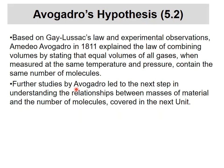So based on Guy-Lussac's law and experimental observations, Avogadro, this is around the time Dalton was coming into play too, he explained the law of combining volumes by stating that equal volumes of all gases, when measured at the same temperature and pressure, contain the same number of molecules. Equal volumes of all gases. If I have five liters of gases all lined up at the same temperature and pressure, the same number of molecules. It probably ought to be particles because it could be molecules themselves or it could be atoms just by themselves. Helium, neon, argon, some of those types of things. And so he kept going on it. And what he ended up with is what we're going to be covering in the next unit is finding something about the relation between masses of material and the numbers of molecules that you have in that sample. And that would be the end.